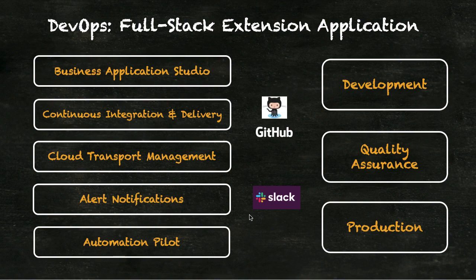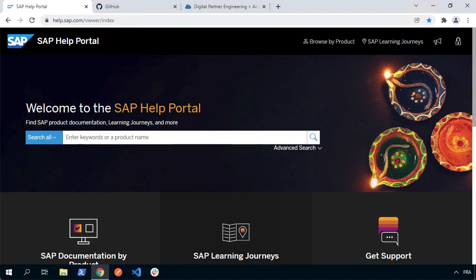The exact choice of components and transport nodes in your pipeline is completely up to you. We're covering one example that hopefully gets you from zero to DevOps hero in terms of understanding how all the components fit together, so you can set up your scenario in the way that makes sense for your project. Before we start building, let's look at where to find key documentation and reference guides from the SAP Help Portal.